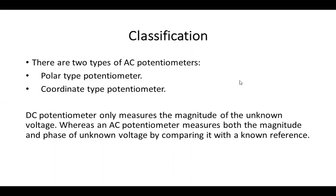AC potentiometer is mainly of two types, polar type and coordinate type.